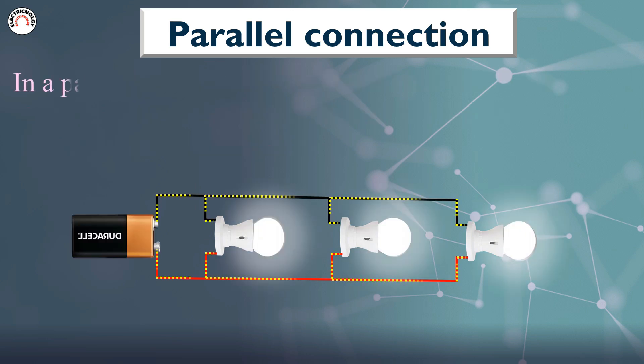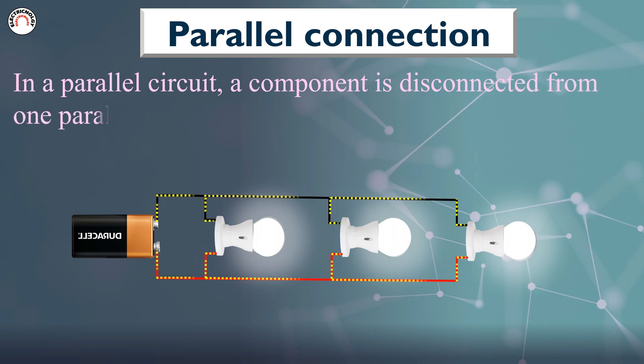In a parallel circuit, a component is disconnected from one parallel wire, the components on different branches keep working.